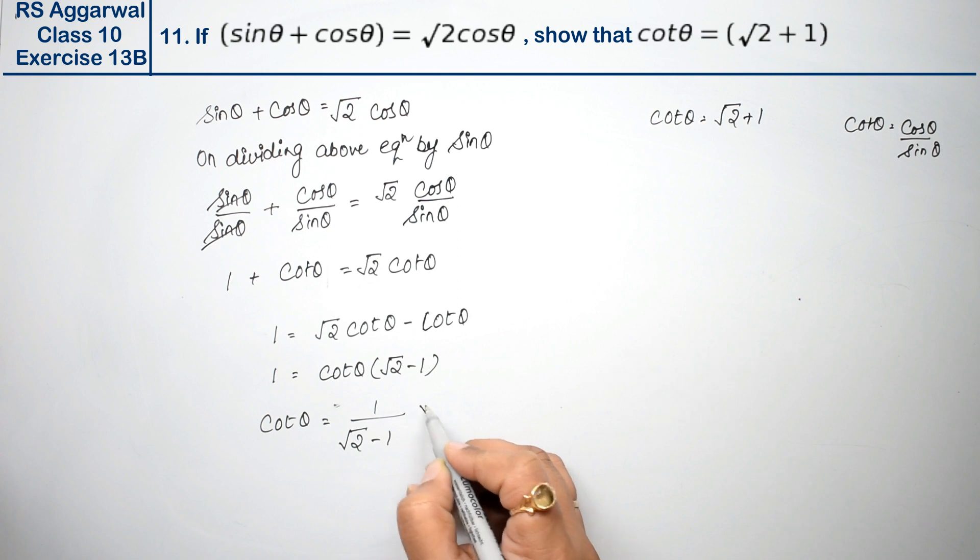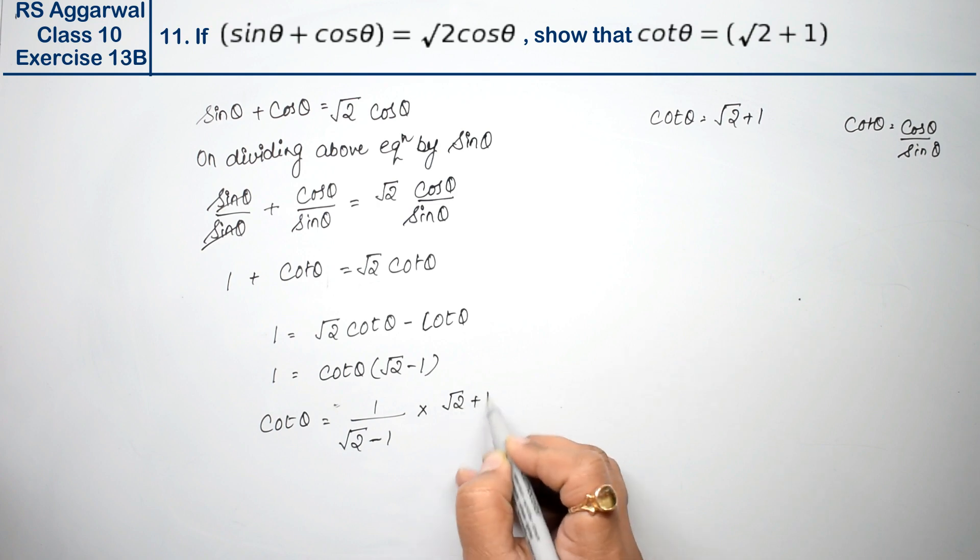Now we rationalize. If we multiply by the opposite sign, root 2 plus 1, then multiply and divide.